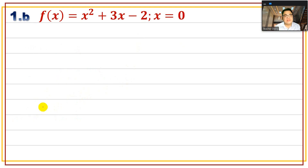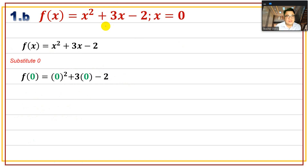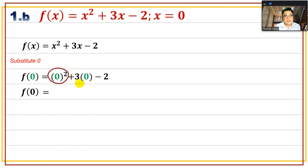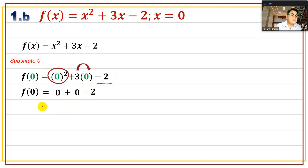For x = 0: f(0) = 0² + 3(0) - 2. Since 0² = 0 and 3 × 0 = 0, we get f(0) = 0 + 0 - 2 = -2. Therefore f(0) = -2.